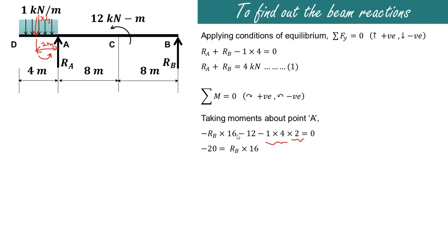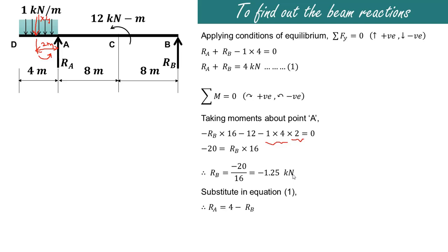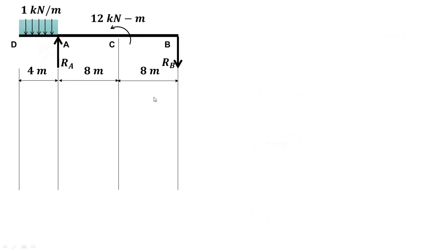Transferring minus RB into 16 to the other side gives RB into 16 equals minus 20, so RB equals minus 1.25 kilonewtons. Substituting into equation 1: RA equals 4 minus RB. Since RB is minus 1.25, RA equals 4 plus 1.25 equals 5.25 kilonewtons. The negative value of RB indicates its actual direction is downward, not upward as assumed. So RA acts upward and RB acts downward.